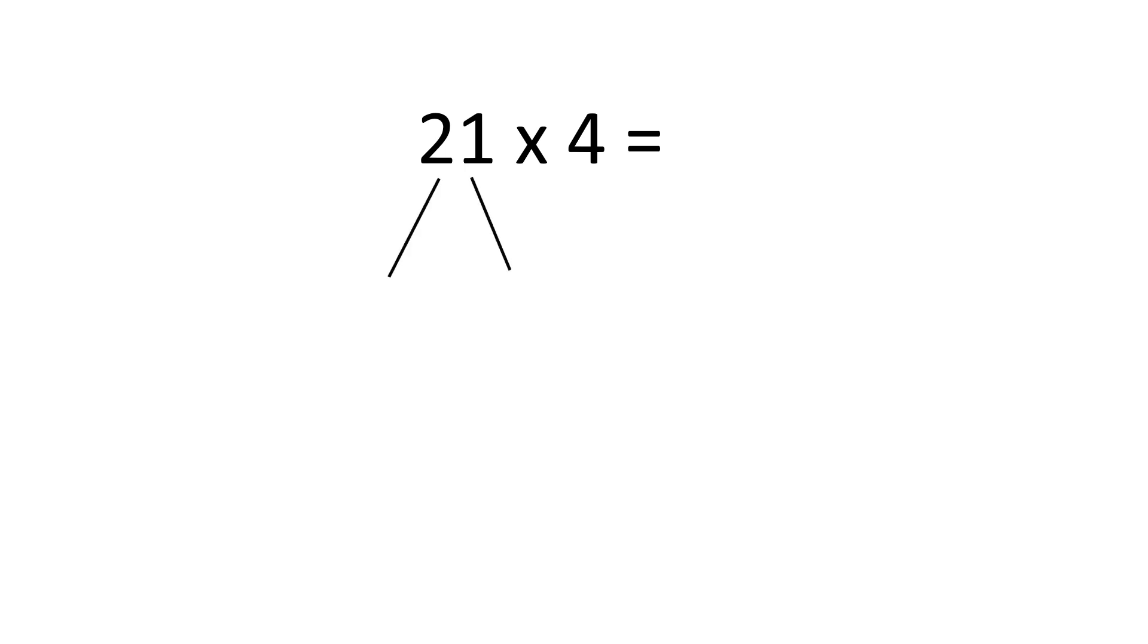21 is made up of 20 and 1. Now, we must multiply each of these parts by the one-digit number. In this case, 4.